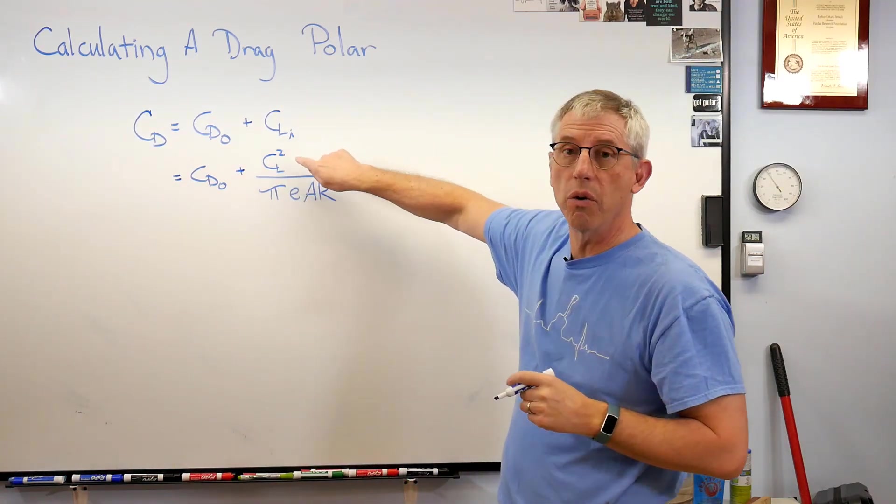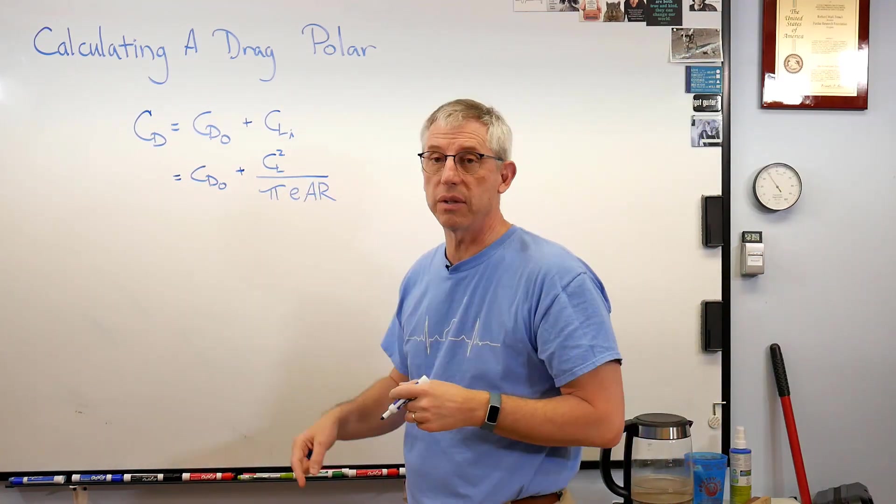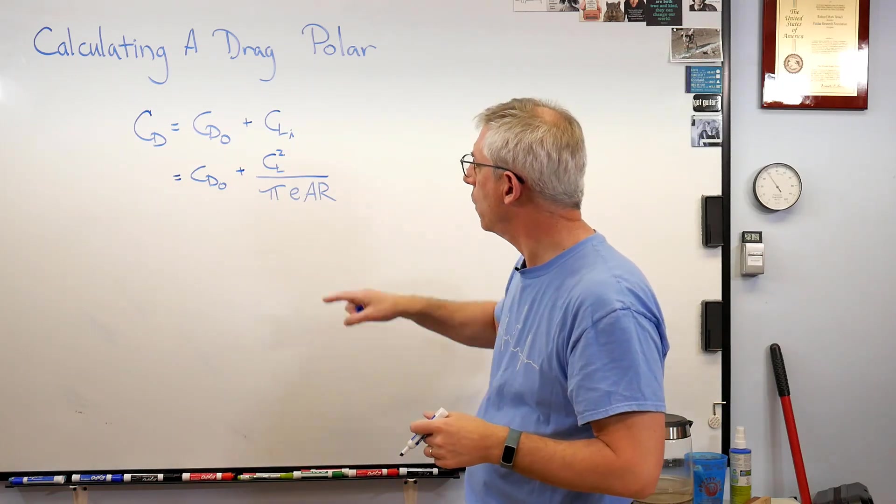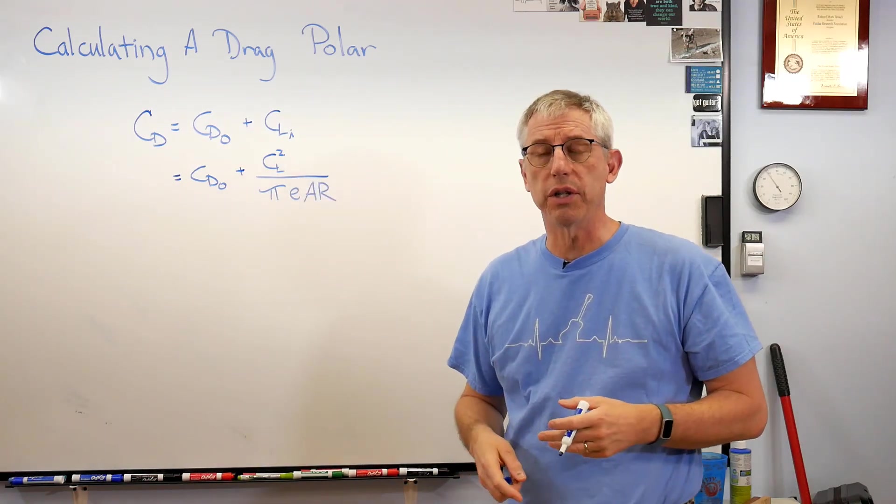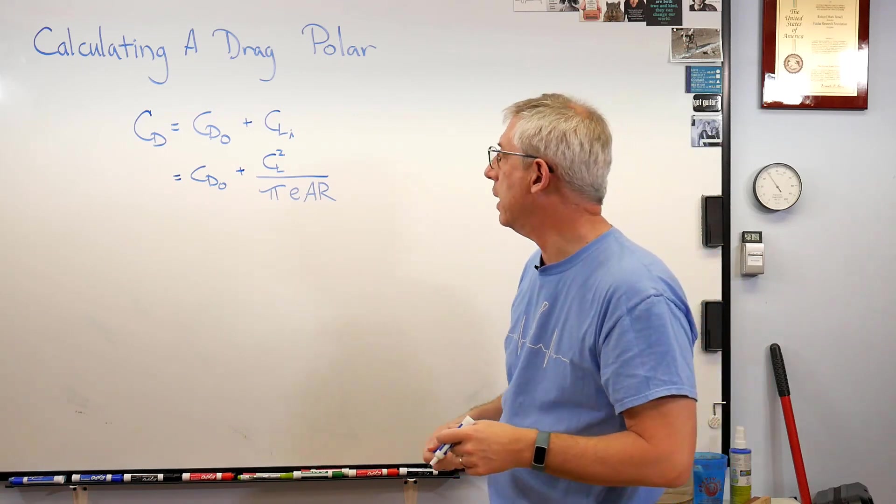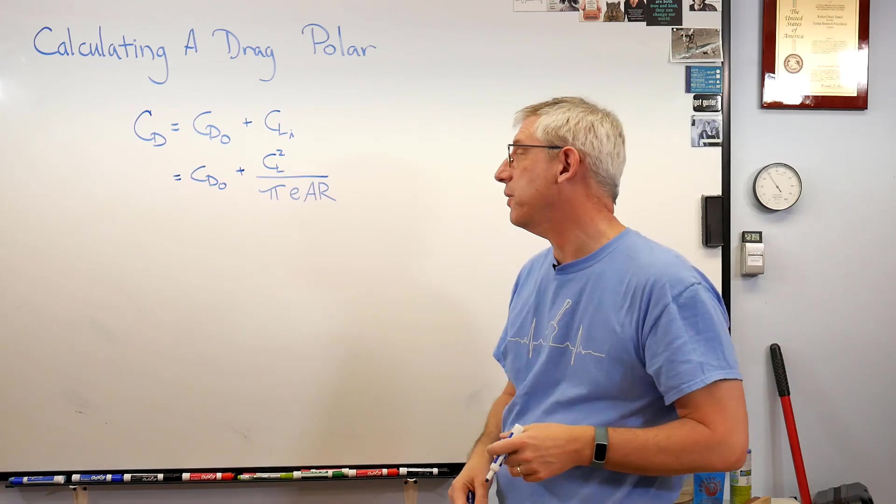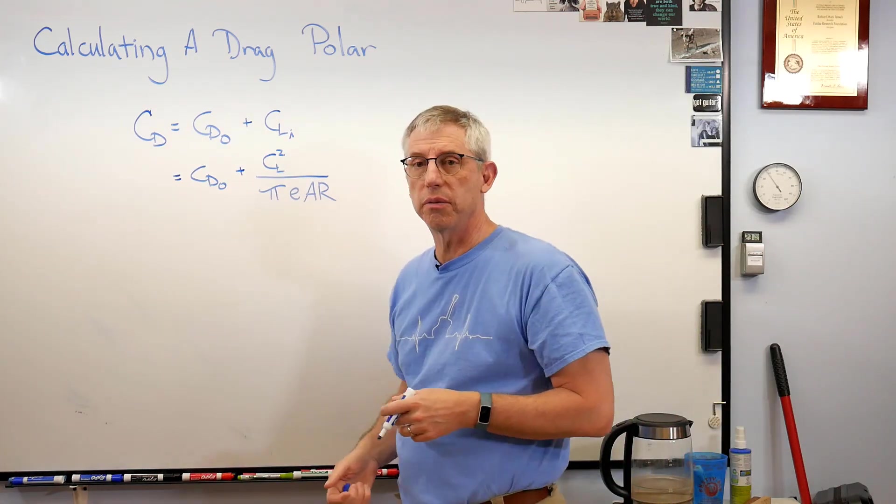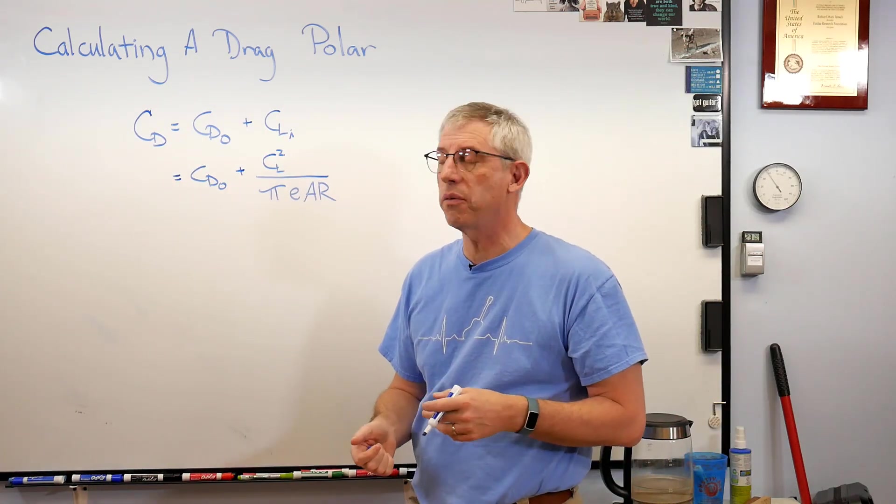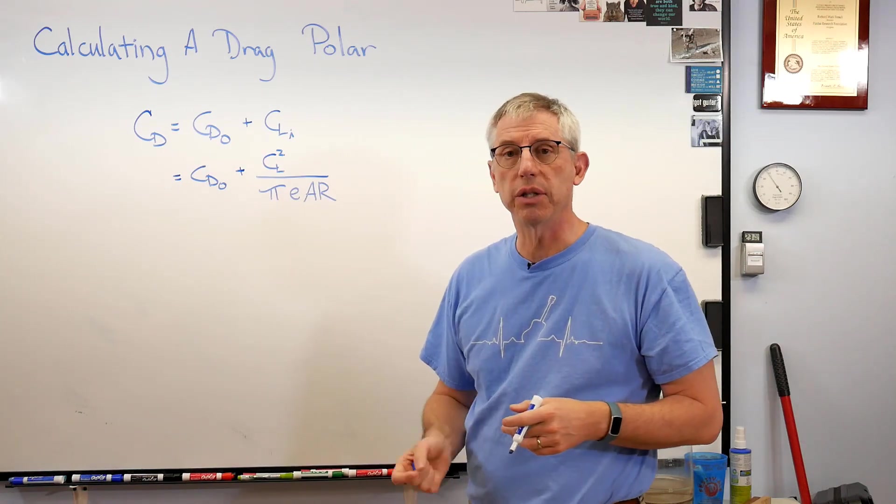It's a function of coefficient of lift squared, so that makes this a parabola. CL is the lift coefficient, that's a measure of how much lift you're making. Pi is just a number. E is called the Oswald efficiency factor, and this is basically a measure of how efficient the wing planform is. And this is aspect ratio, AR.